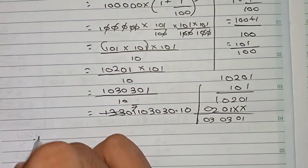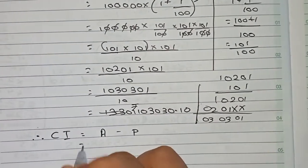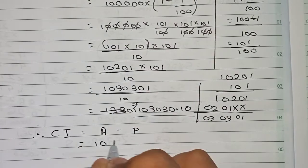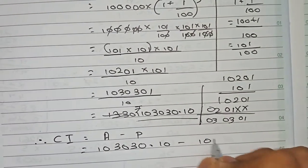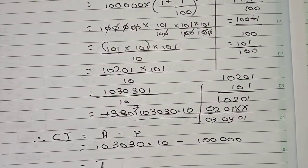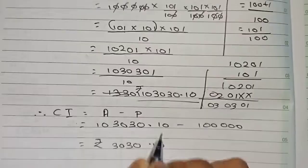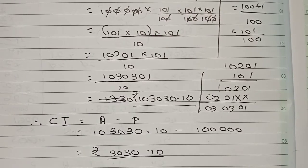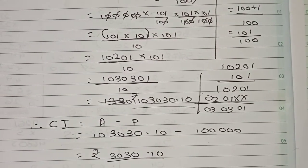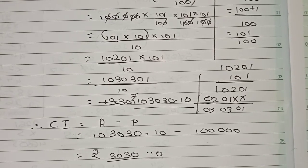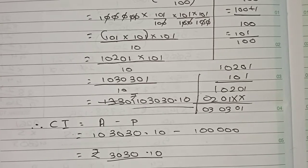Now we find the compound interest using the formula: CI = Amount − Principal. So CI = 1,03,030.10 − 1,00,000 = rupees 3,030.10. Therefore, the amount is rupees 1,03,030.10 and the compound interest is rupees 3,030.10.